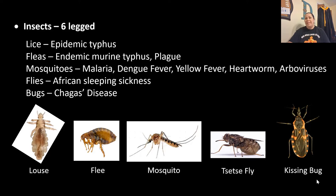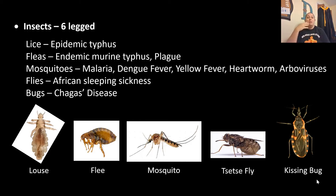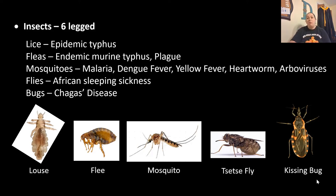The kissing bug gets its name because it is attracted to carbon dioxide, which draws it to your mouth or nose especially while you're sleeping. It will bite you, but it is not the bite itself that infects you with Chagas disease — it's the feces. It defecates on you and the feces get into the bite sore, causing infection. By controlling these vectors, we can potentially control how these diseases spread.